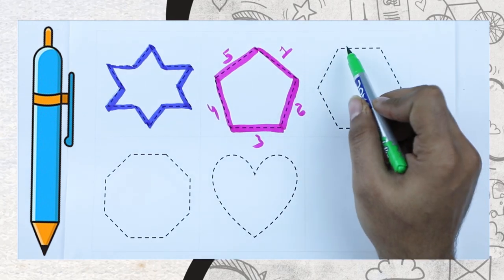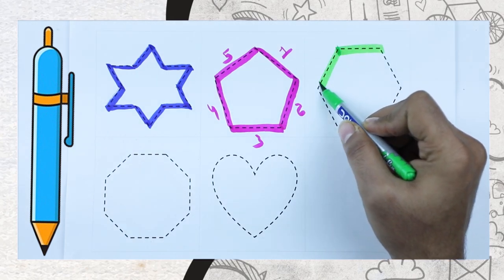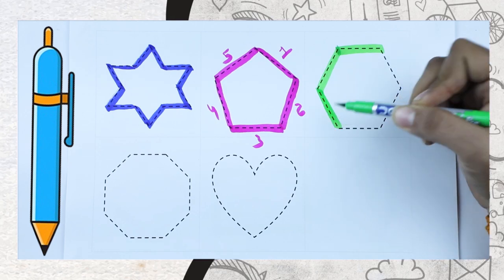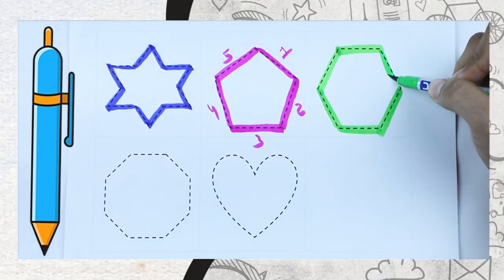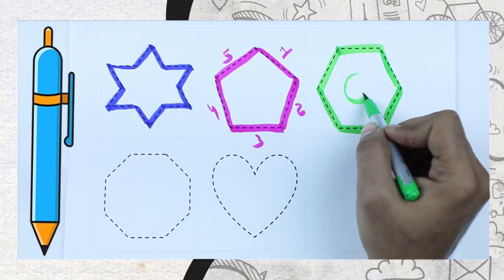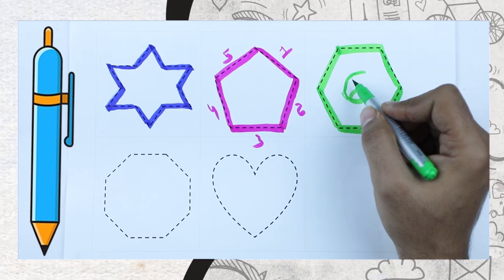Now hexagon with green color. One, two, three, four, five, six. Hexagon has six lines. It's called hexagon.